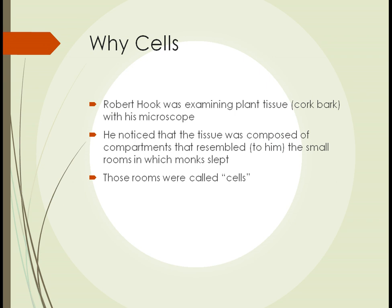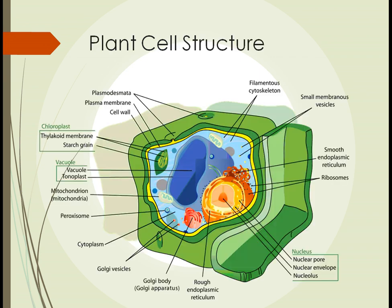Why are they even called cells? Robert Hooke was examining plant tissue — cork bark — with a microscope. He noticed that the tissue was composed of little separate compartments that resembled the small rooms that monks slept in. In the monastery those rooms were called cells, so he named these compartments cells, and the name stuck.